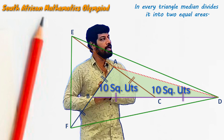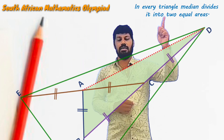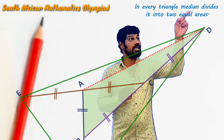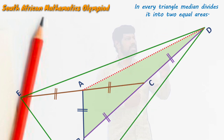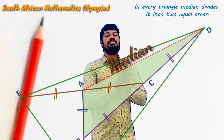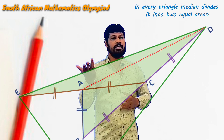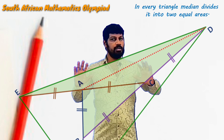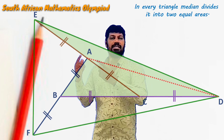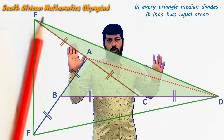Now just for convenience, let me rotate the diagram so that D appears at the top. In triangle DCE, we can see that DA is a median. We already know that area is 10, and since the median divides every triangle into two equal areas, this triangle is also going to be 10 square units. So with the help of only one concept, we are finding all the triangle areas. After joining AD, we got two different triangles with area 10 each.